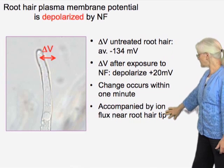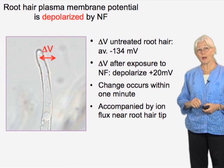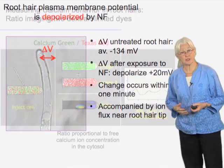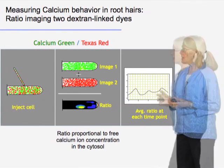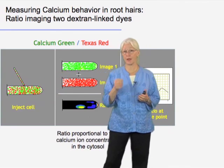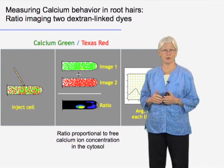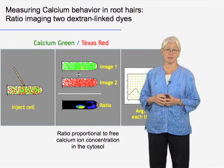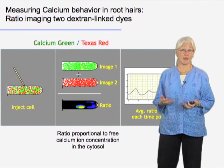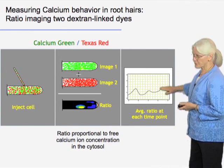In our studies and others, this has been shown to be accompanied by ion fluxes and ion currents near the tip. One ion in particular is very interesting: calcium. We've used different techniques; here's one of them. On the left you can see a root hair, and into this root hair we're delivering a mixture of two different fluorescent proteins — one fluorescent irrespective of calcium concentration, the other increasing its fluorescence when calcium is high. Using those two together, we take a ratio and get the calcium value corrected for cytoplasmic concentration, then track that over time.